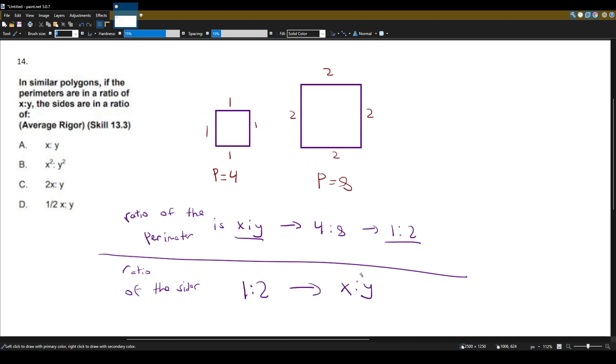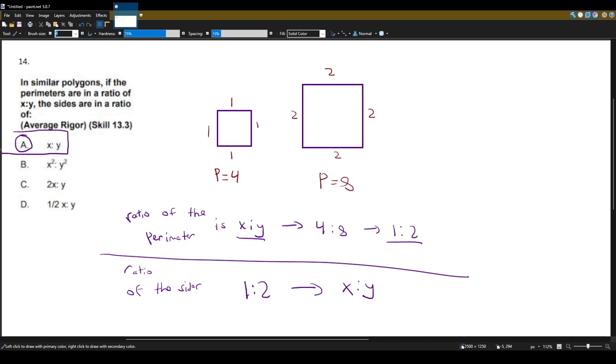And that's actually answer choice A. So what this means is that the ratio of the sides of similar polygons is the same ratio as the perimeters.